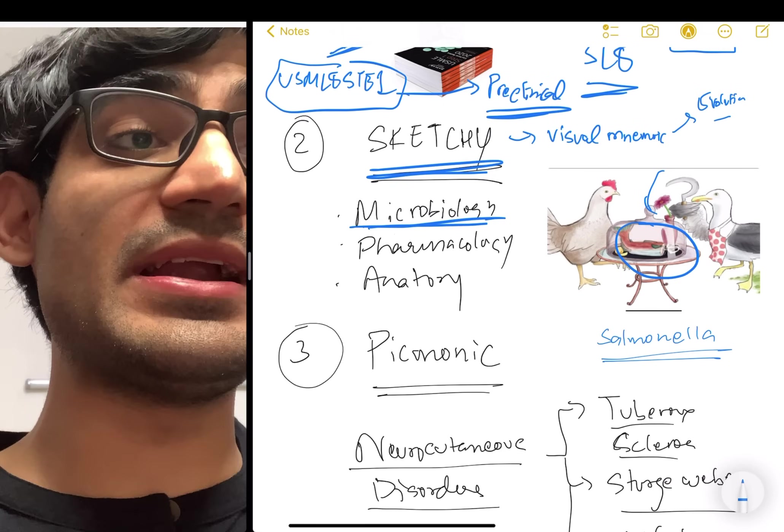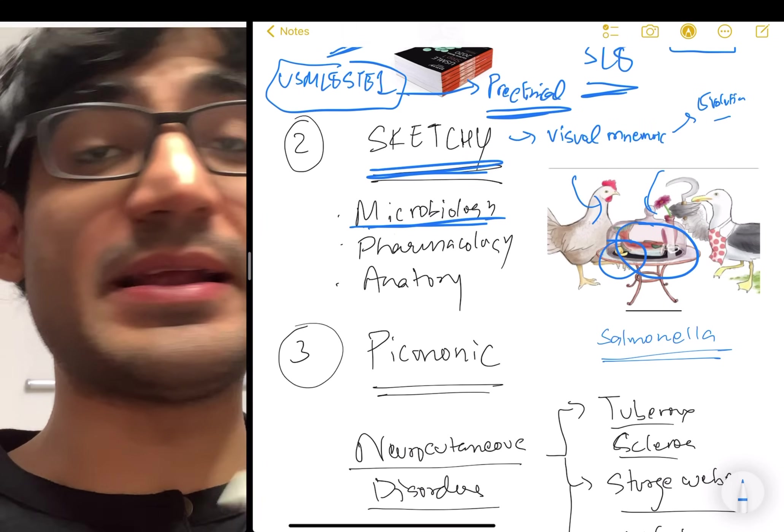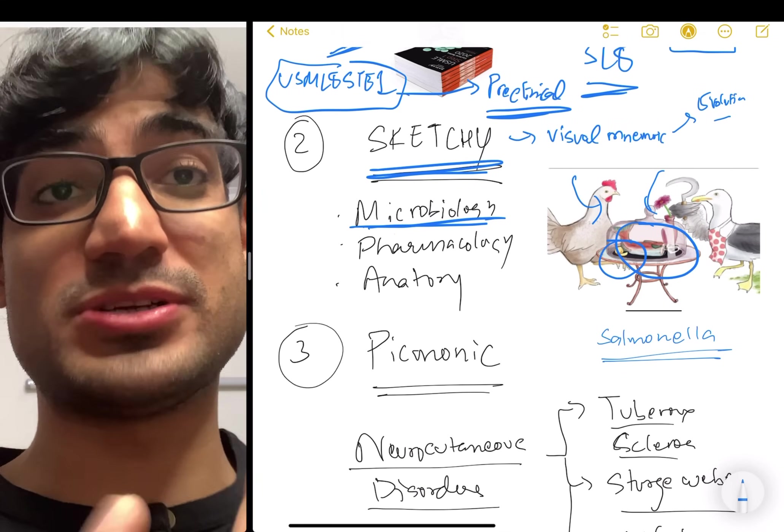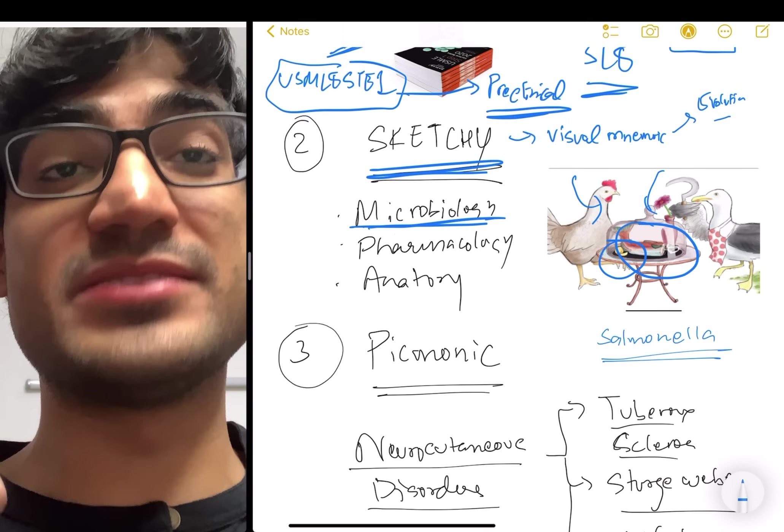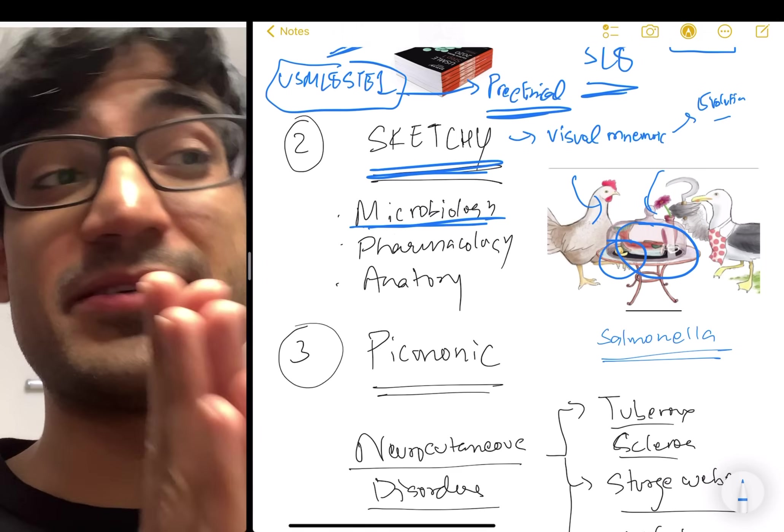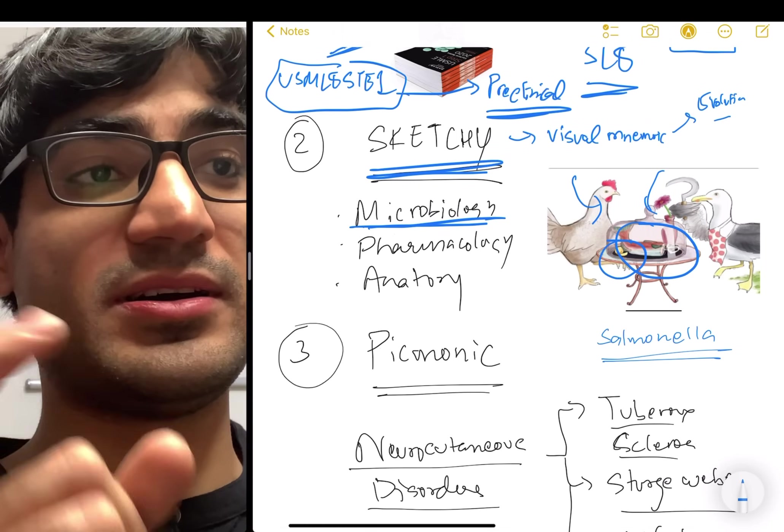You can get Salmonella by eating chicken. So you can see that typhoid and Salmonella enteritidis, especially Salmonella enteritidis. You can get that. It also has a type three secretion system, which is not shown here. But they show that in the Sketchy Micro videos. There's an injection syringe, and this is what causes the inflammatory diarrhea.